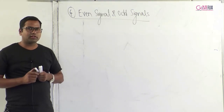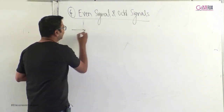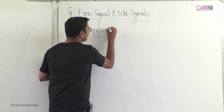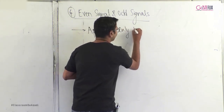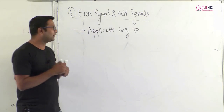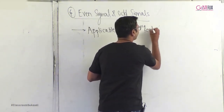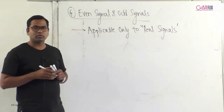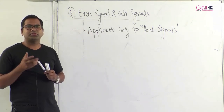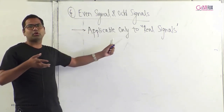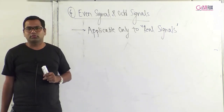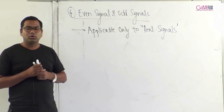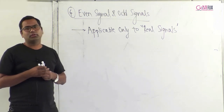Before we begin with even and odd classification, it is very important to understand that this classification is applicable only to real signals. If a signal is complex, you cannot classify it as even or odd. The first condition is that the signal has to be real.